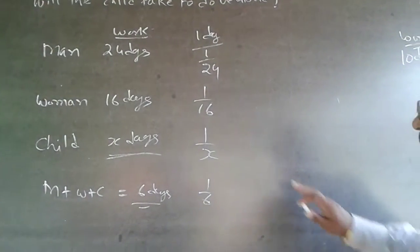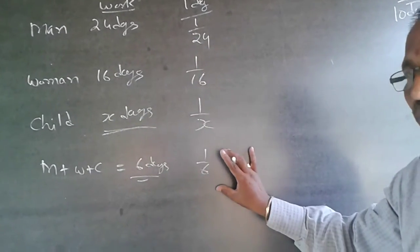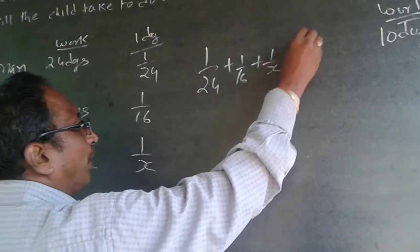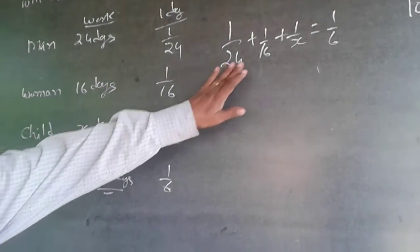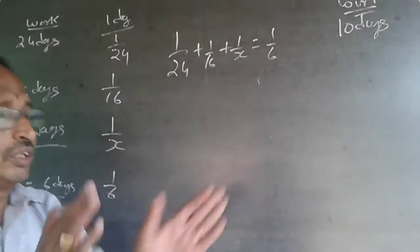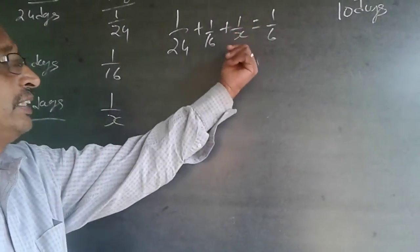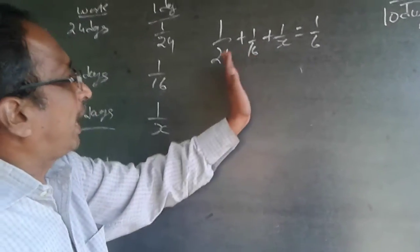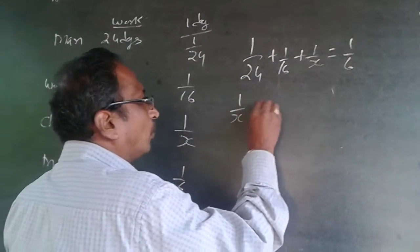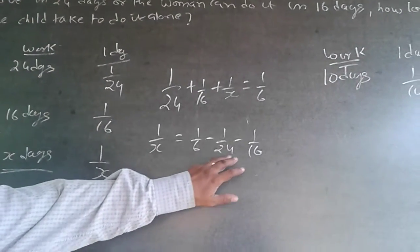Now let us solve this. The combined output in one day is: 1 by 24 plus 1 by 16 plus 1 by x equals 1 by 6. The easier way is to take the variable to one side and the numbers to the other — don't unnecessarily create the LCM with x also. So 1 by x will be equal to 1 by 6 minus 1 by 24 minus 1 by 16.